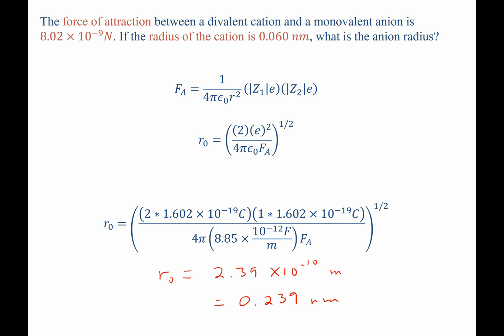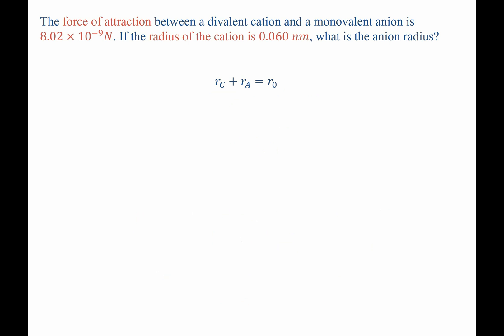Okay, we are almost finished now. Now we go back to our initial relationship that Rc + Ra = R0, and now we know some of these values. We know that R naught is 0.239 nanometers. Therefore, if we subtract from that the radius of the cation, we should have the radius of the anion, which equals 0.18 nanometers.